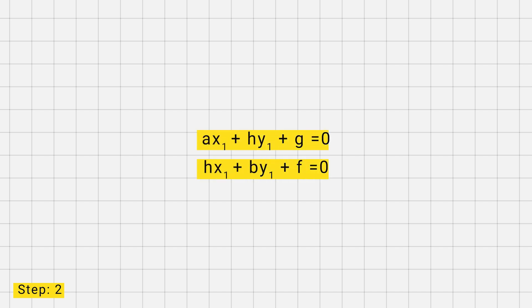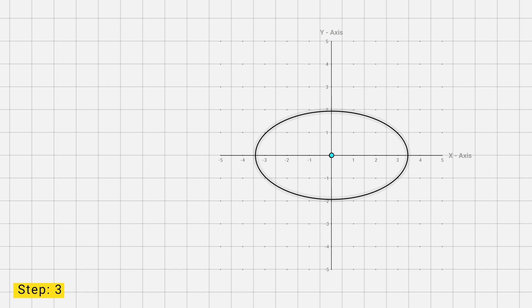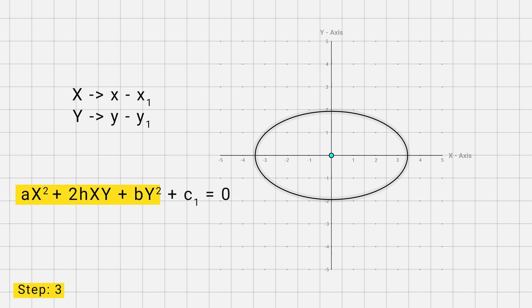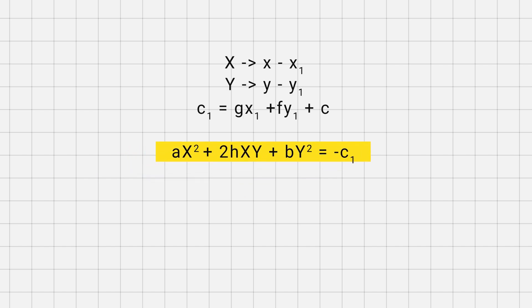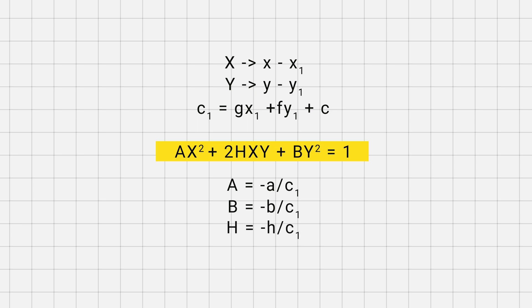Our second step is to find the center of the conic, which can be found by solving the partial derivative equations. Our next step is to shift the center to the origin, which can be done by replacing x with x minus x1 and y with y minus y1. The main equation then becomes ax squared plus 2hxy plus by squared plus c1, where c1 equals gx1 plus fy1 plus c. This equation can then be further written in standard form, where A equals minus a by c1, B equals minus b by c1, and H equals minus h by c1.